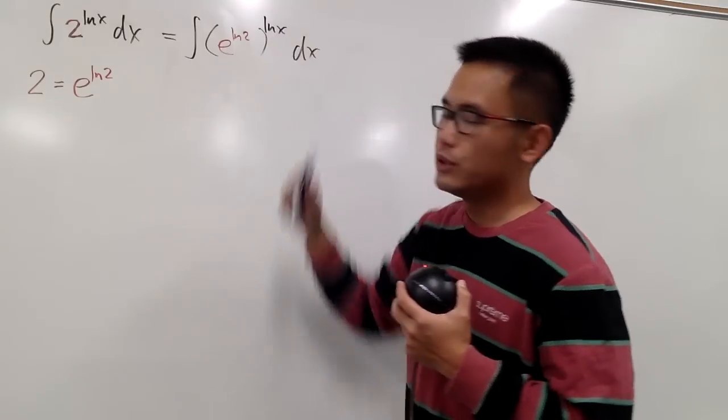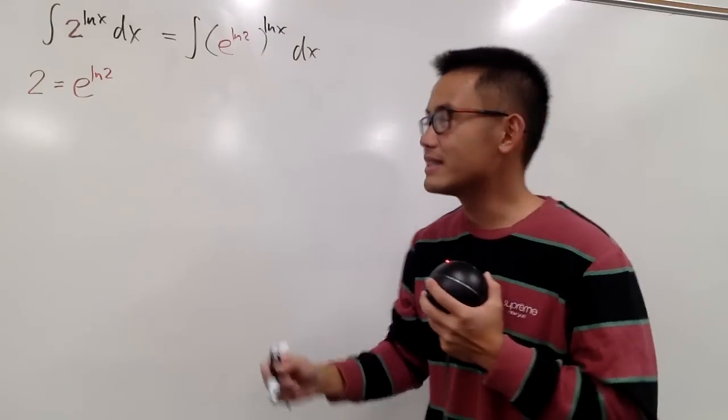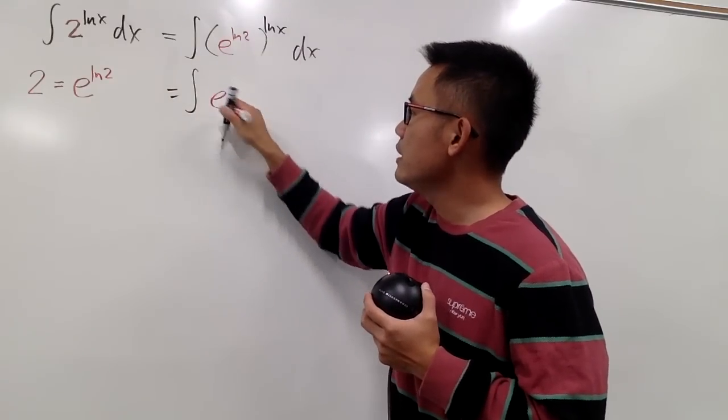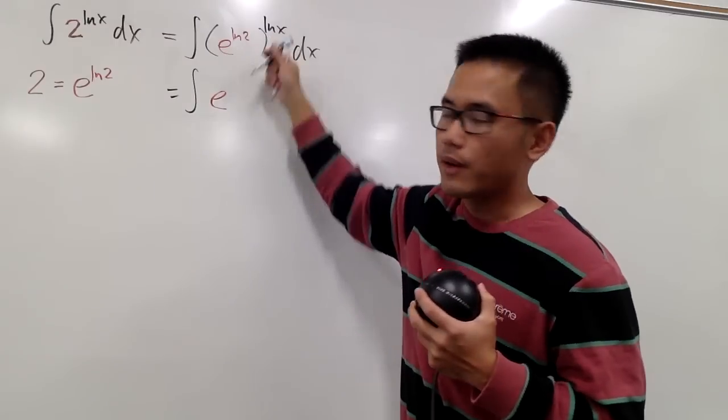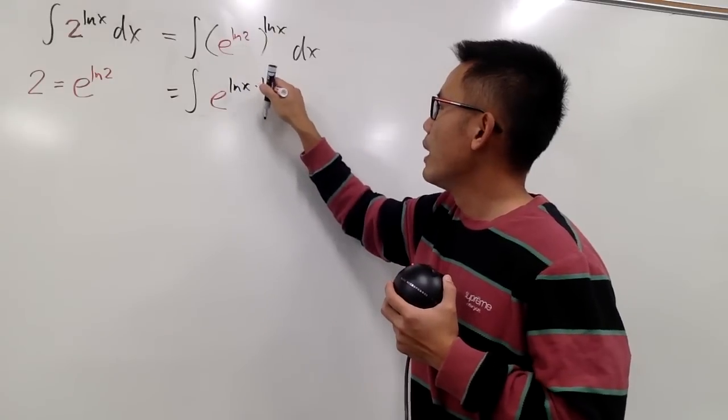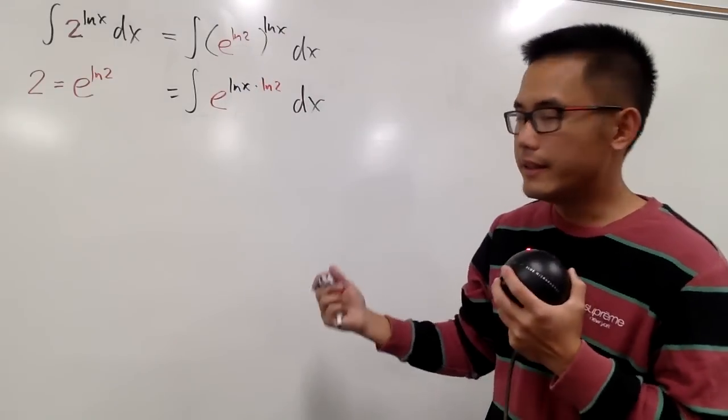Now we have a power to a power situation. So what can we do with the powers? We can multiply them, isn't it? So now this is going to be the integral and then e is still the e. And let me put down the ln x first. So I just say this is ln x. And we multiply by this ln 2, alright? dx, like that.